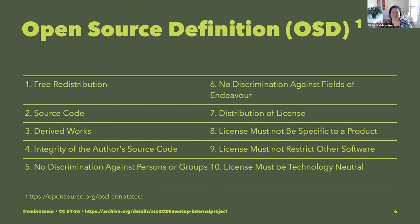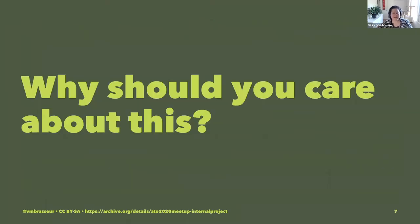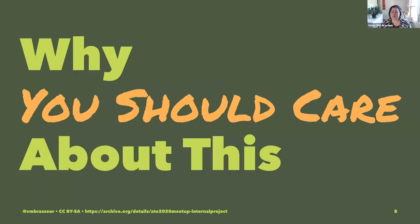Any software that does not provide for each and every one of these 10 items is not, literally by definition, open source. But why should you care about this? Why am I spending so much time reviewing what theoretically is just basic information? Again, it's partly because most people don't understand this and don't realize there is a definition at all, but they also don't understand the importance and why they should care.